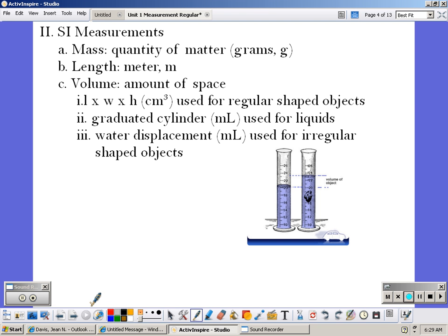We're going to use the SI measurements. So mass is the quantity of matter, and it's going to be measured in grams. Length is measured in meters. Volume is the amount of space something takes up, and can be measured in three different ways.